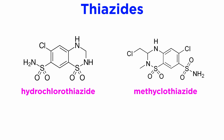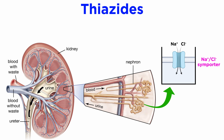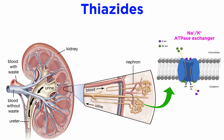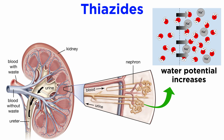Moving on, thiazides such as hydrochlorothiazide and methiclothiazide work on the early distal tubule of the nephron by blocking the sodium chloride symporter. This transporter protein moves sodium ions and chloride ions at a stoichiometry of 1 to 1 from the nephron tubular fluid into the distal convoluted tubule cells. After sodium and chloride ions have been reabsorbed, they can go on to be moved back into the interstitial fluid via the sodium-potassium ATPase exchanger protein.